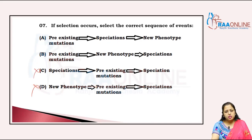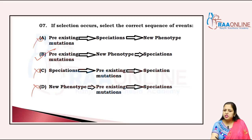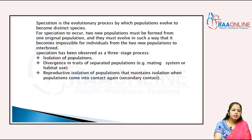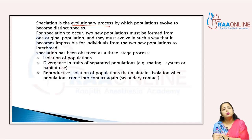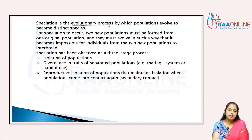C and D are cancelled. The correct sequence is: first the new phenotype, then the speciation. Speciation is the evolutionary process by which a population evolves to become a distinct species with some new characters.